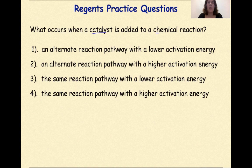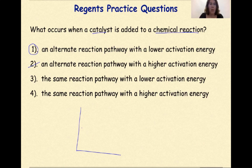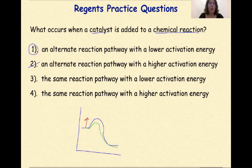What occurs when a catalyst is added to a chemical reaction? The answer is: an alternative reaction pathway with a lower activation energy. A higher activation energy is wrong because we want activation energy lowered. The same reaction pathway with lower or higher activation energy is also incorrect. So the correct answer is number one. Looking at an energy diagram, the original pathway goes from reactants up to a certain activation energy peak. With a catalyst, an alternative reaction pathway is created that lowers the activation energy — the peak is lower than the original pathway.